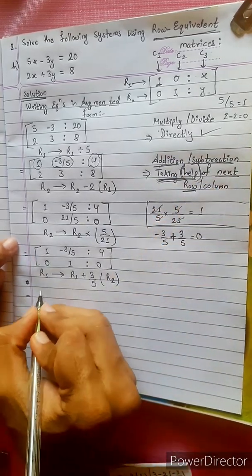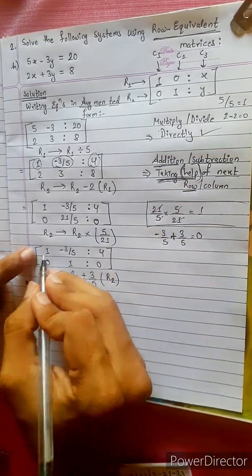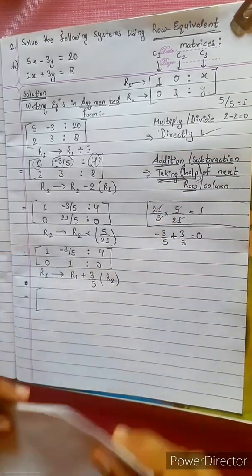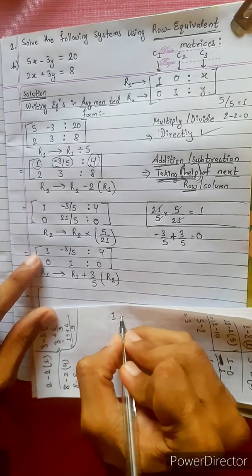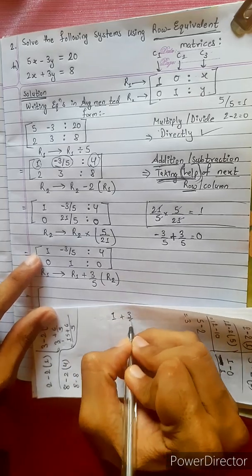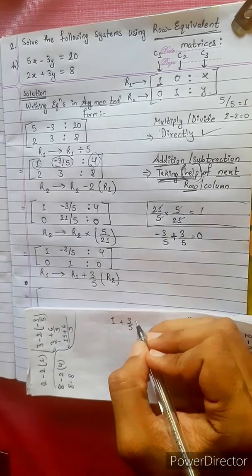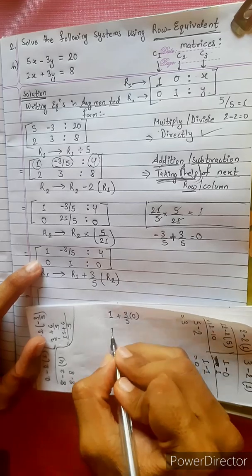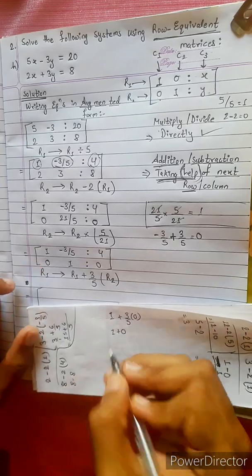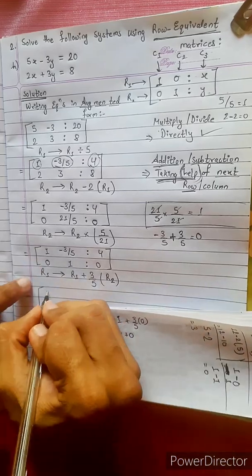We start with R1. R1 will become R1 plus 3 by 5 times R2. The first entry is 1 plus 0, which equals 1.